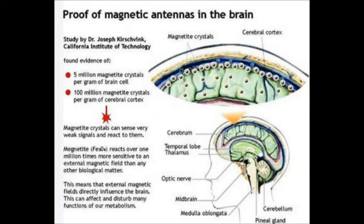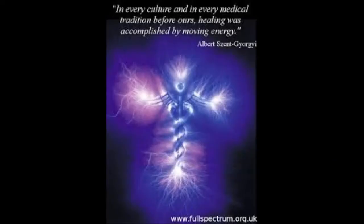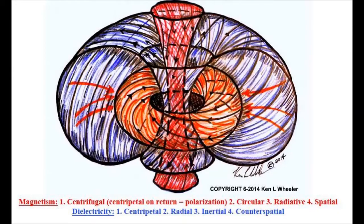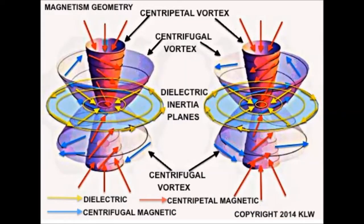Magnetite crystals in the brain react to magnetic fields over one million times more sensitively than other biological matter. This means external magnetic fields directly influence the brain — they can affect, heal, and also disturb many functions of our metabolism. Biomagnetic energy in every culture and every medical tradition before modern times: healing was accomplished by moving energy. Let's get into the three dimensions of how this works — centrifugal, centripetal, circular, radiative, and spatial.